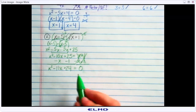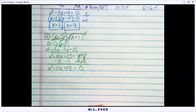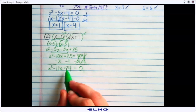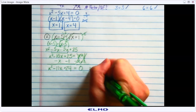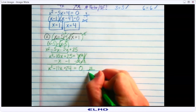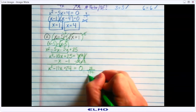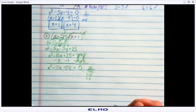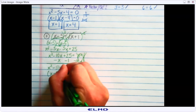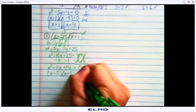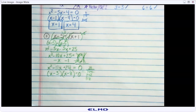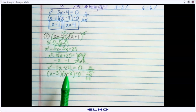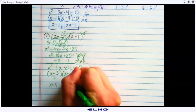To solve this, I'll try factoring first since it's much easier if it works. I need two numbers that add to negative 11 and multiply to 24. Starting with the multiplying pairs: 1 and 24 — no; 2 and 12 — no; 3 and 8 — that could give me 11, as long as they're both negative. So I'll have x minus 3 times x minus 8. If you're unsure, multiply it back together — it should give you x squared minus 11x plus 24. Finishing the solve gives x equals 3 and x equals 8.